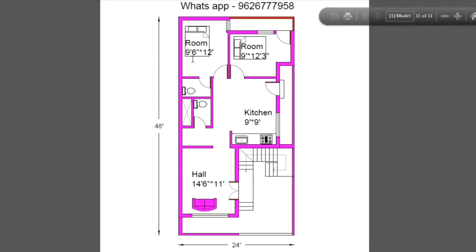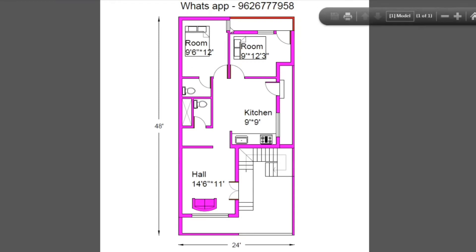Master bedroom size is 9 feet 6 inches by 12 feet. One window is placed. Attached bathroom size is 4 feet by 6 feet — western closet. One ventilator is placed and one window.